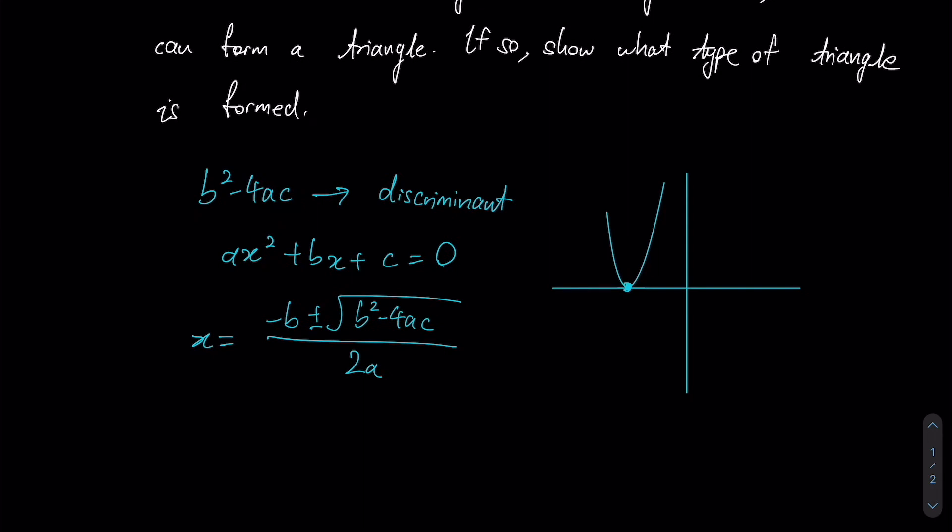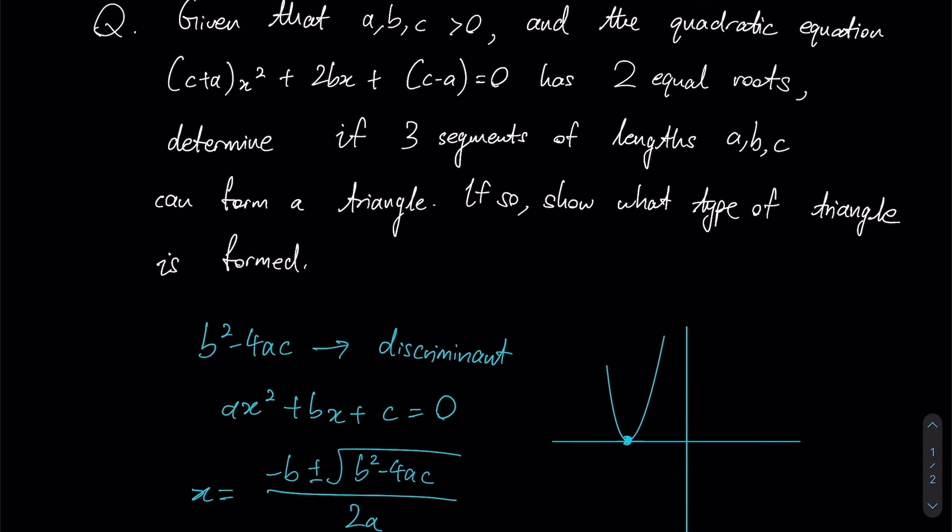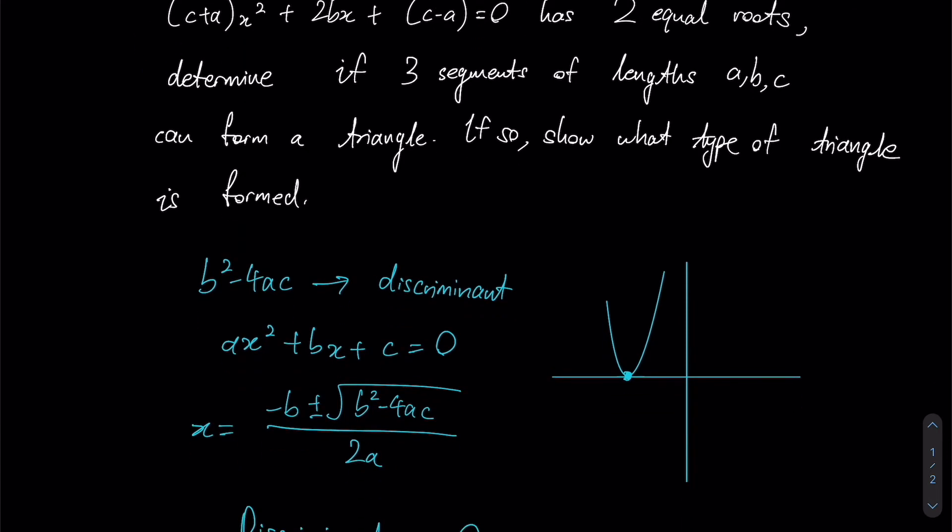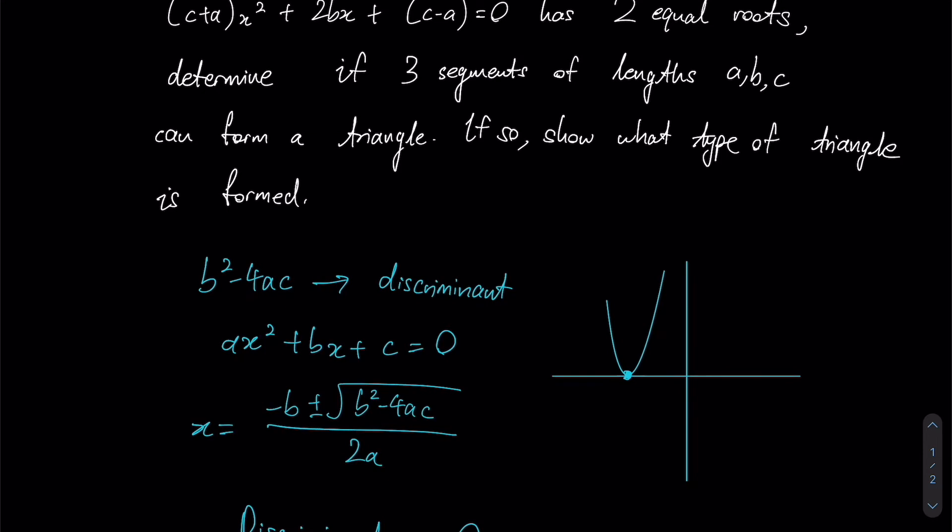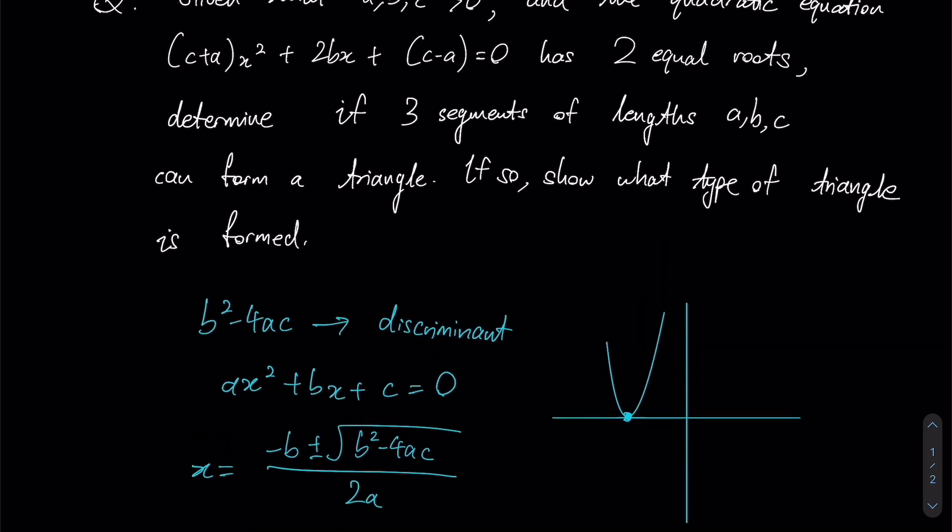All we need to do is show that the discriminant must be zero. Based on the equation that we are given, since this is already in the general form, we can just use the coefficients straight away as presented where my b is now 2b, so this is b² - 4...